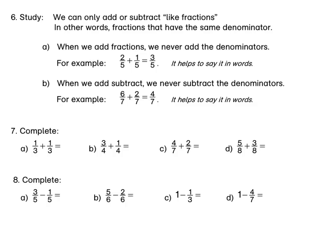For B, when we subtract fractions, we never subtract the denominators. For example, it helps to say it in words: 6 sevenths minus 2 sevenths is equal to 4 sevenths.